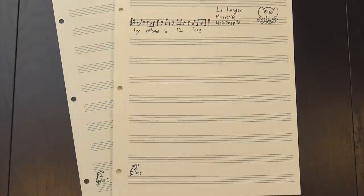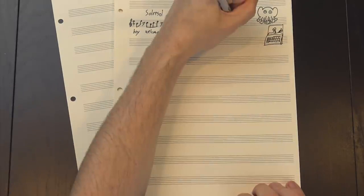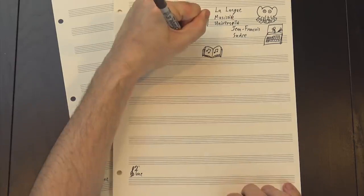Sol Raysol was invented in the mid-nineteenth century by a French musician named Jean-Francois Sudre, who'd become fascinated with the idea of a language made of music. His first attempt, which he called la telephony, was fairly straightforward. He just took the French alphabet and assigned each letter to a musical note.